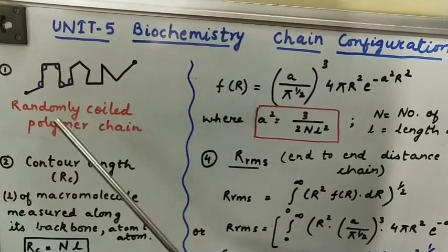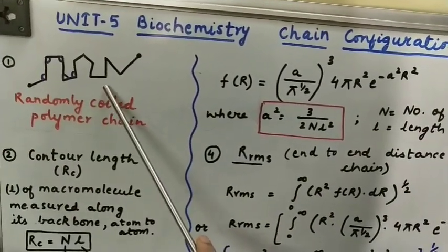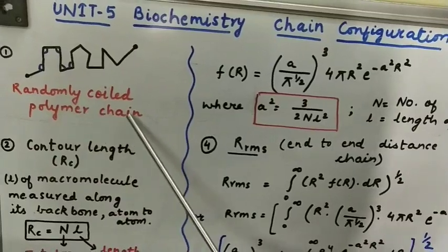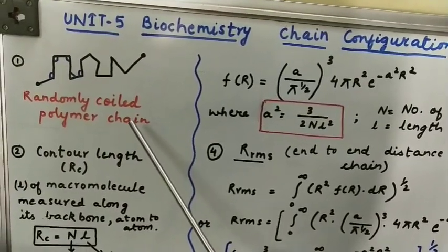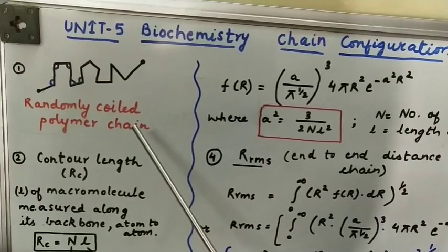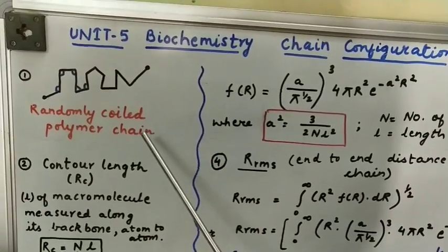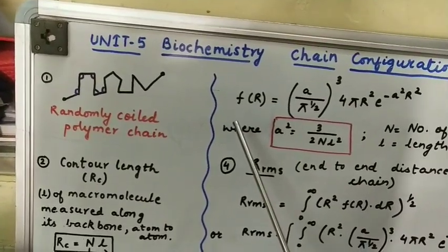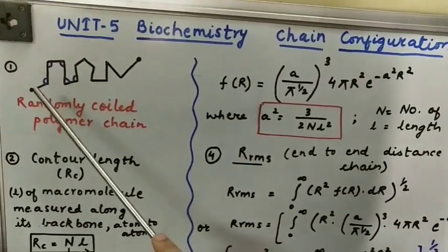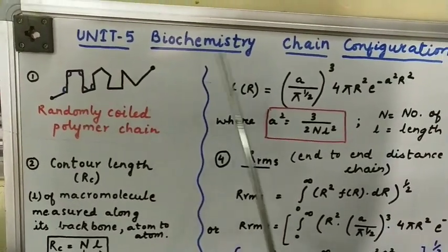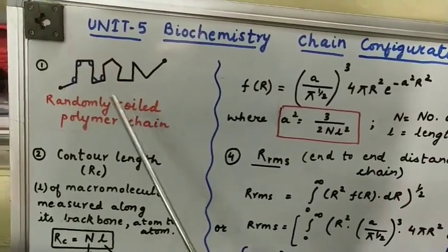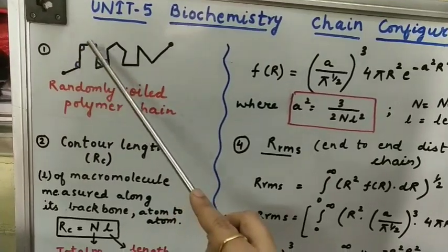So, if we see this diagram where we have shown that this is a randomly coiled polymer chain, what is our motive? We want to understand how a macromolecule's chain is there and how can we determine various parameters of the macromolecule. The best model which interprets this is randomly coiled polymer chain where we can see all the bonds which are being formed.